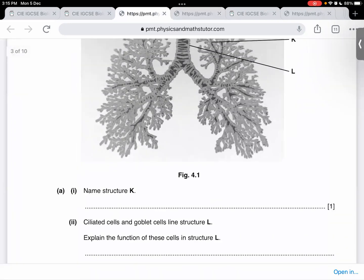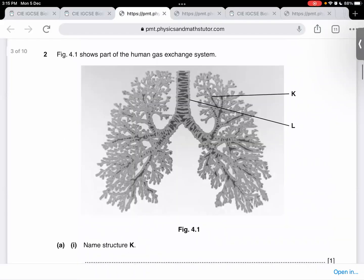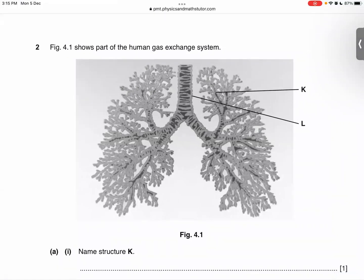Ciliated cells and goblet cells line structure L. Explain the function of the ciliated cells and goblet cells. So, basically, the trachea has two kinds of cells. There are ciliated cells and gland cells or goblet cells. Ciliated cells have hair-like structures called cilia. When we breathe in, the dust in that air is swept away by cilia and it also makes mucus. No, no. Dust in the air is swept away by the cilia. Perfect. But who makes mucus? The cilia doesn't. Goblet cells make mucus.